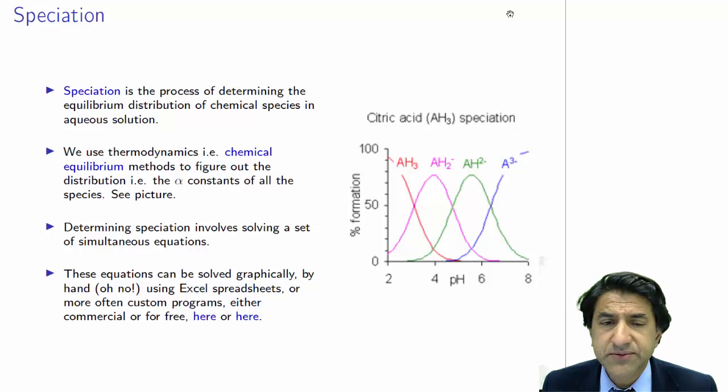How do we do that? We use thermodynamics, that is, chemical equilibrium methods, to figure that out. We find out the alpha constants of all the species. Remember, the alpha constants are the degree of dissociation constants. So let's have a look at the picture, like the dot point says.